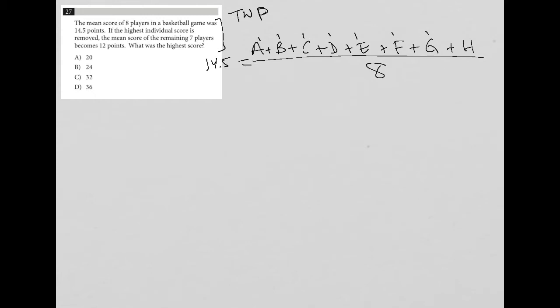So hopefully that makes sense for how I translated that first sentence. The letters here just represent the scores from the eight players because they don't tell us what those scores are. Obviously, if I'm finding the mean, the mean is the same as finding the average. So that's why I divide by eight because there are eight players. And here is the actual mean score.